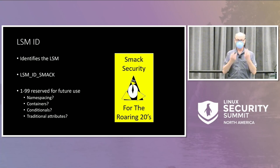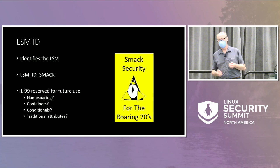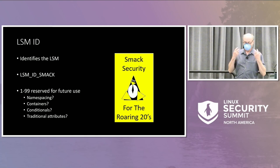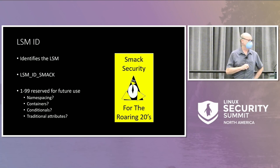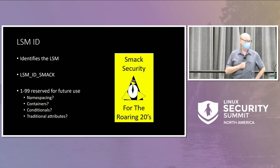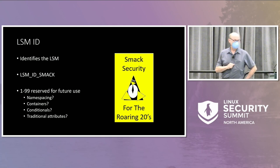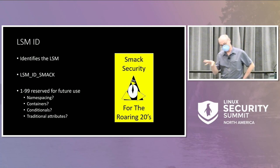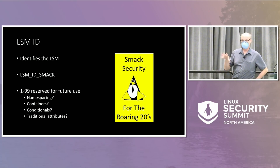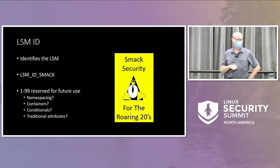This is fairly important if you're going to have a user interface, because you don't want multiple variable-size entities in your structure. If you have multiple variable-size data, somebody's going to break it. The LSM ID identifies the security module — it's a number, reserved in lsm.h. We've reserved the first 99: zero is defined as undefined, and 1 through 99 are reserved for future use.